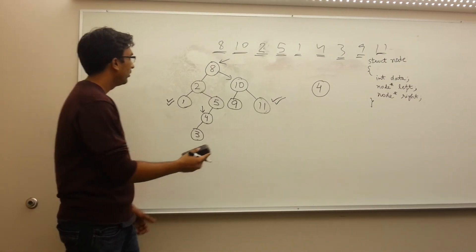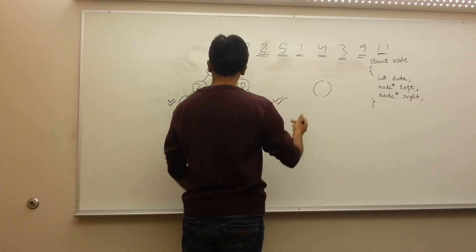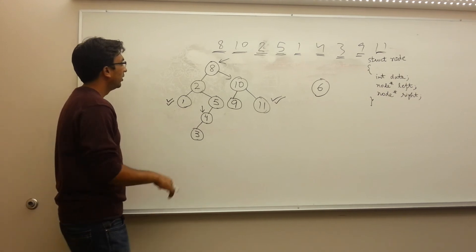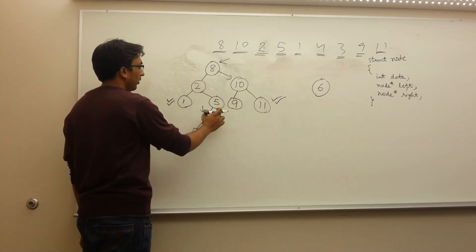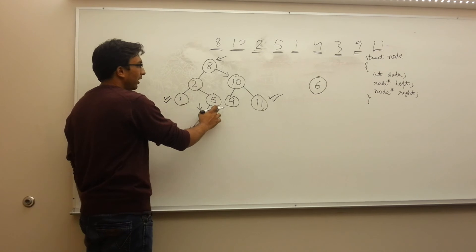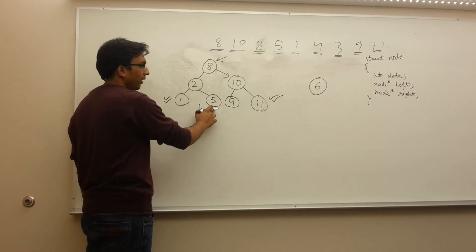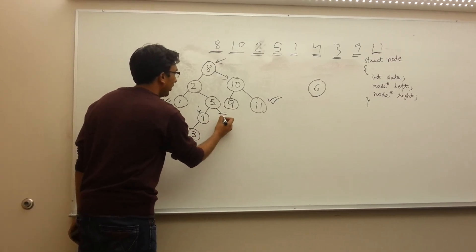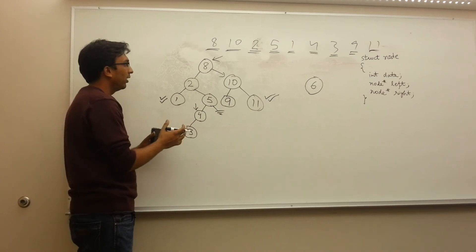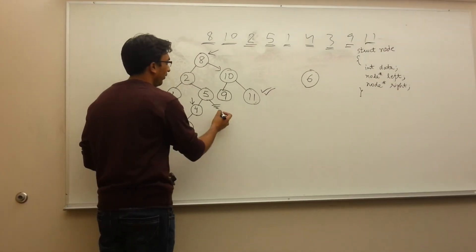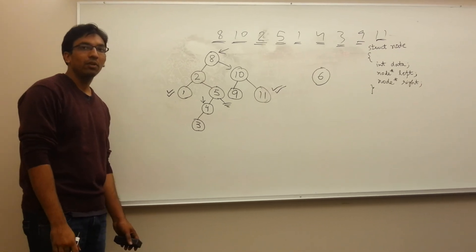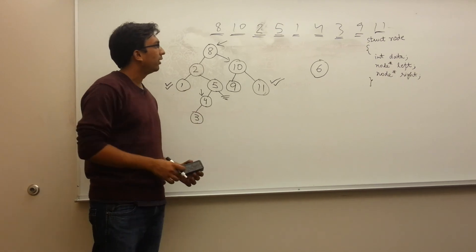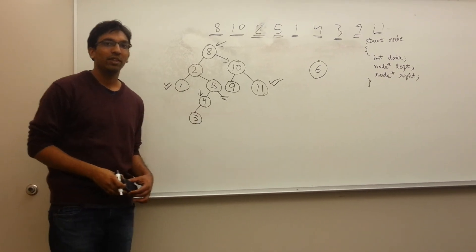Now suppose we were trying to find 6 in this tree. While traversing, we will reach node 5. Since 6 is greater than 5, it should lie on its right side. Since the right side of 5 is empty, that means 6 is not in our tree and we can return. So this covers the basics of binary trees and binary search trees. Thank you.